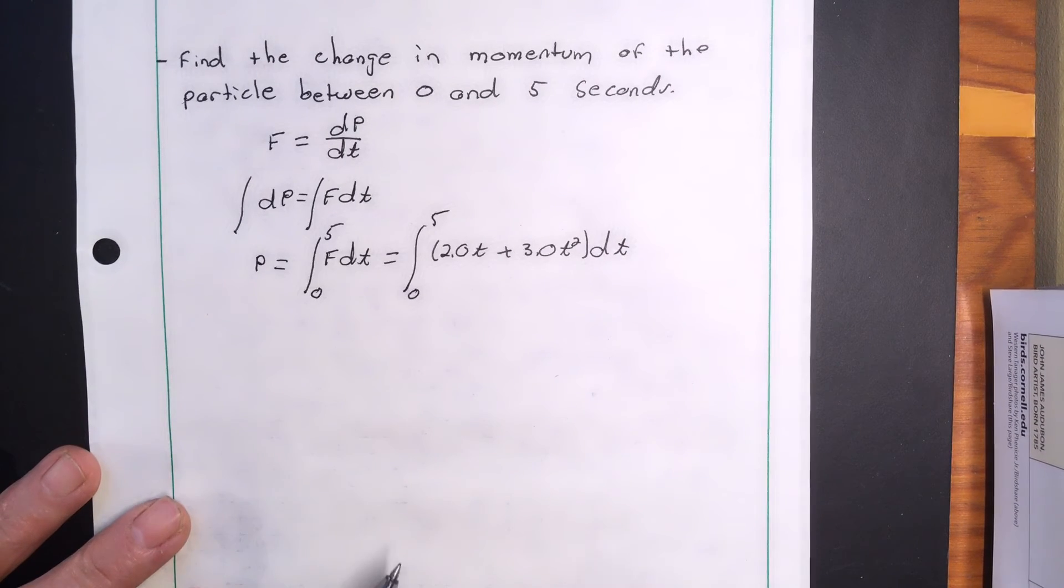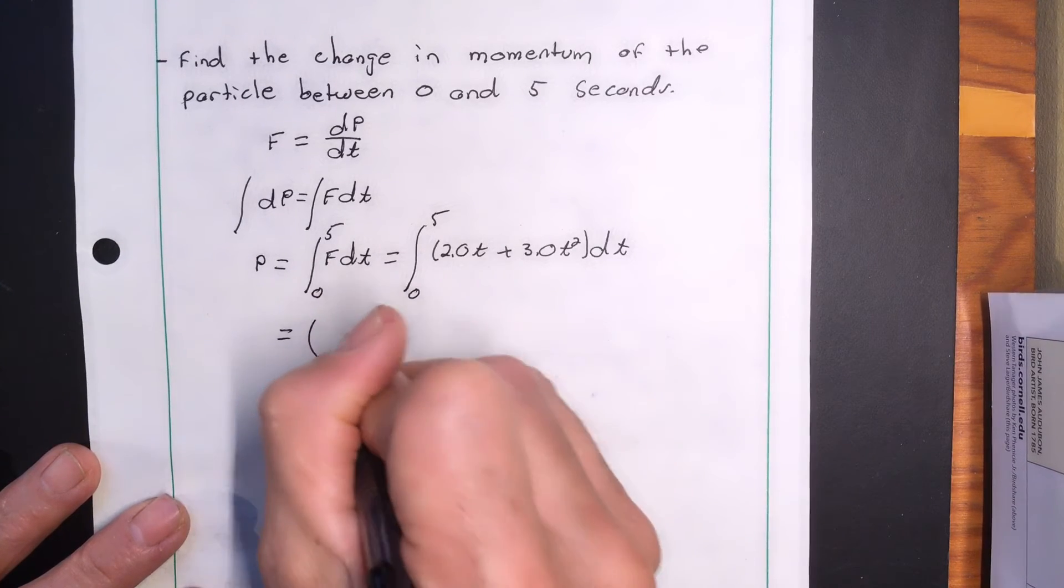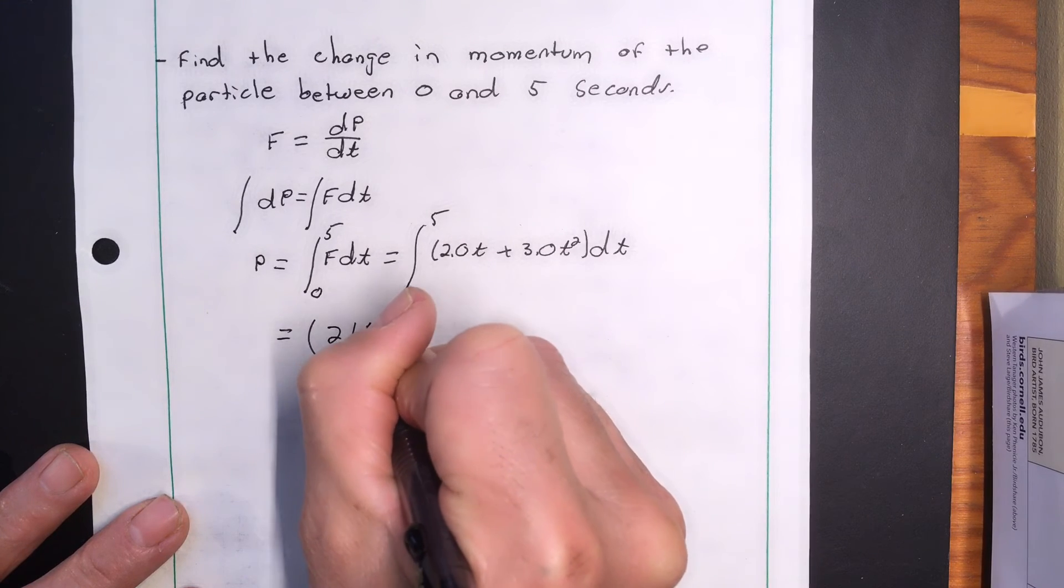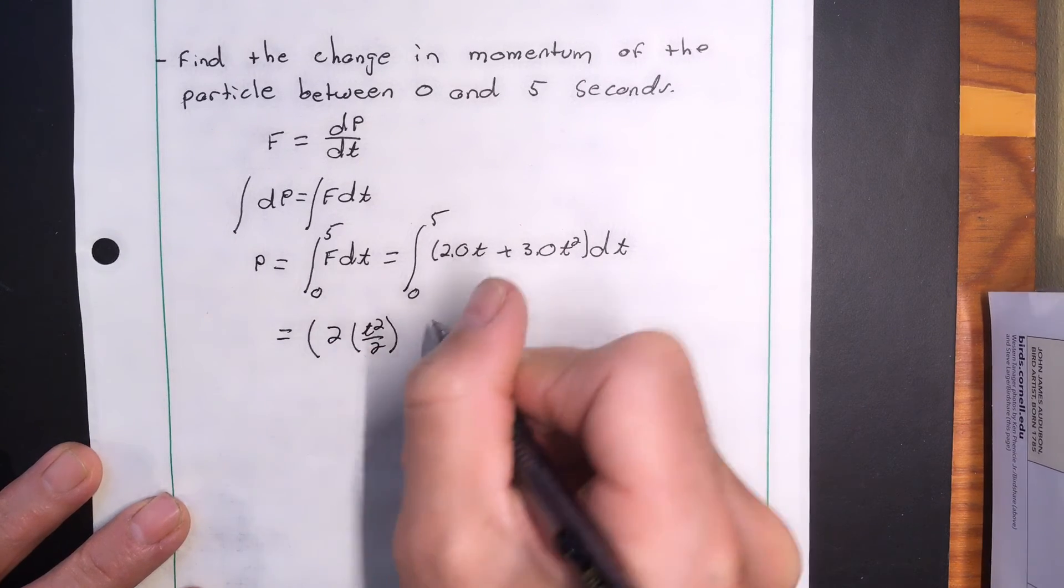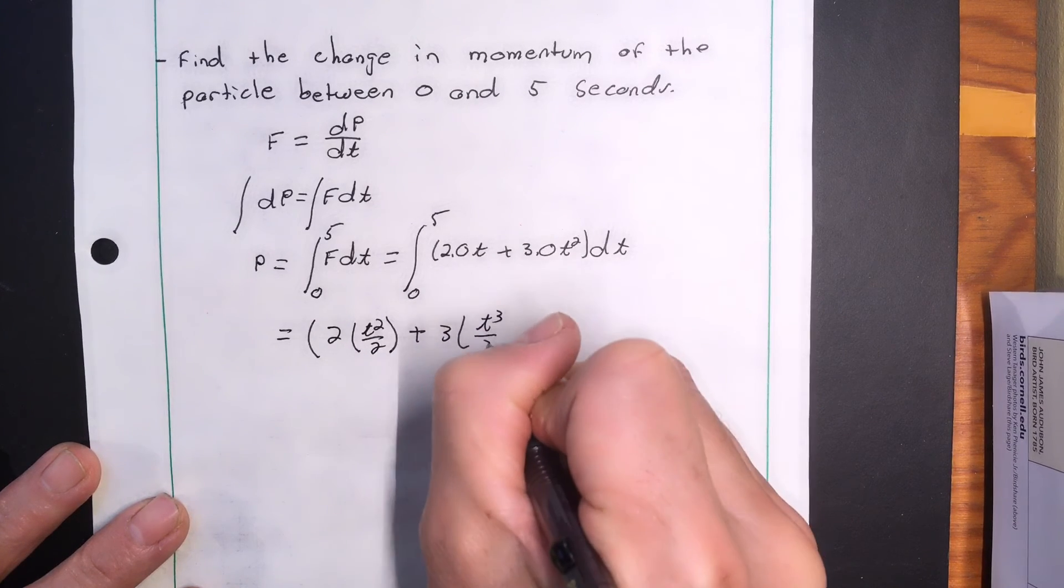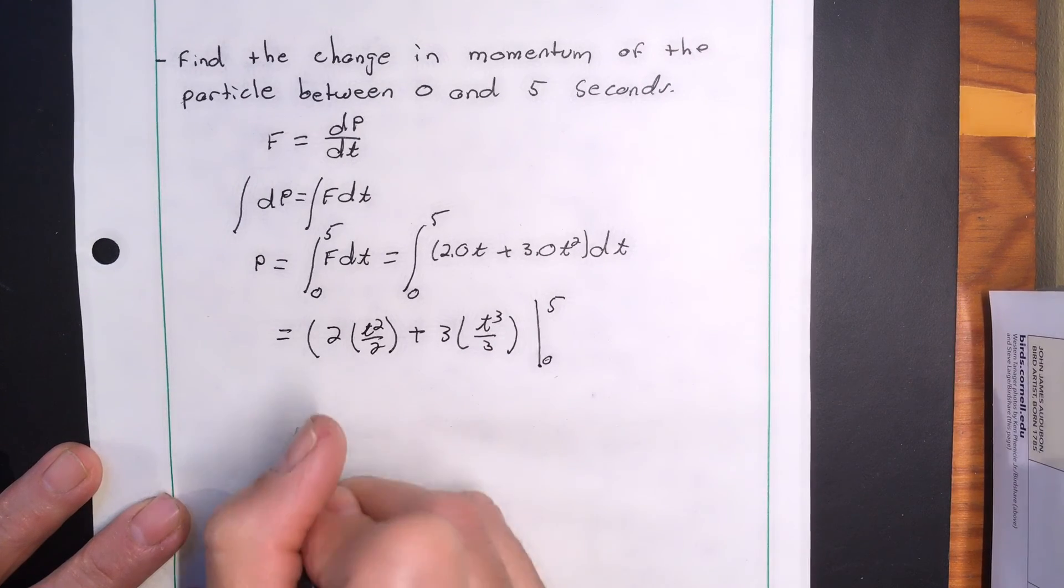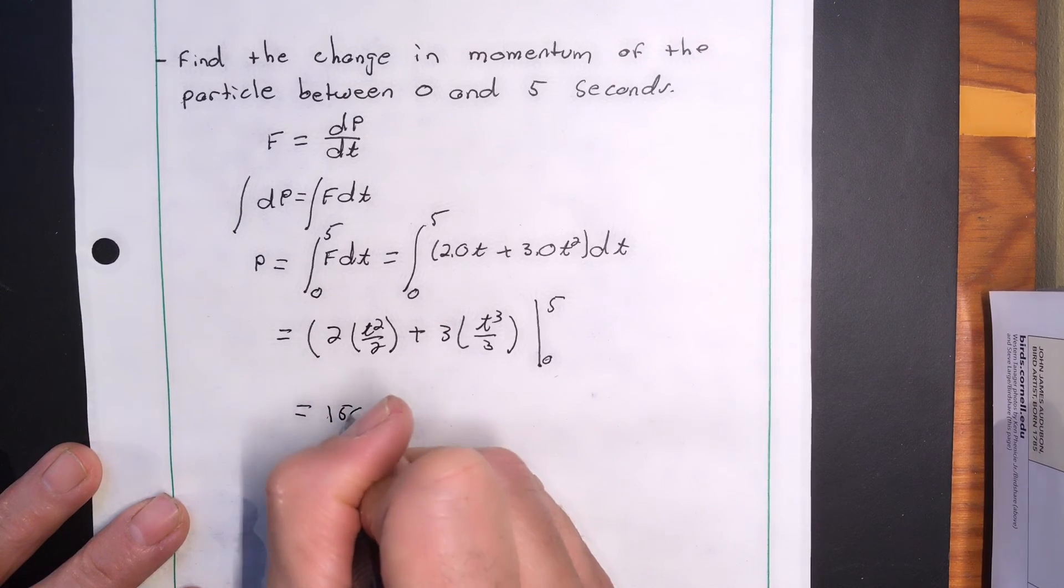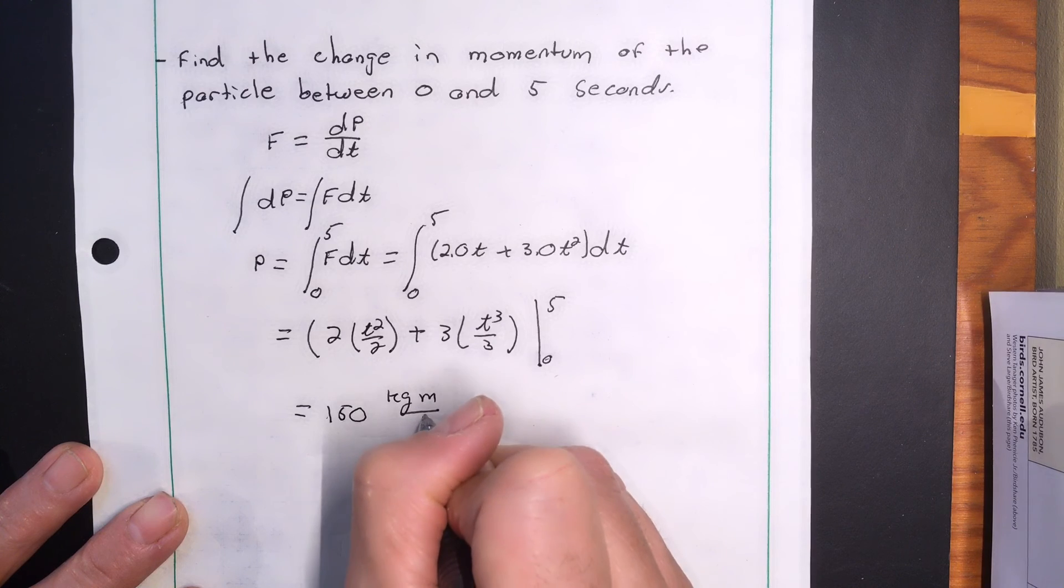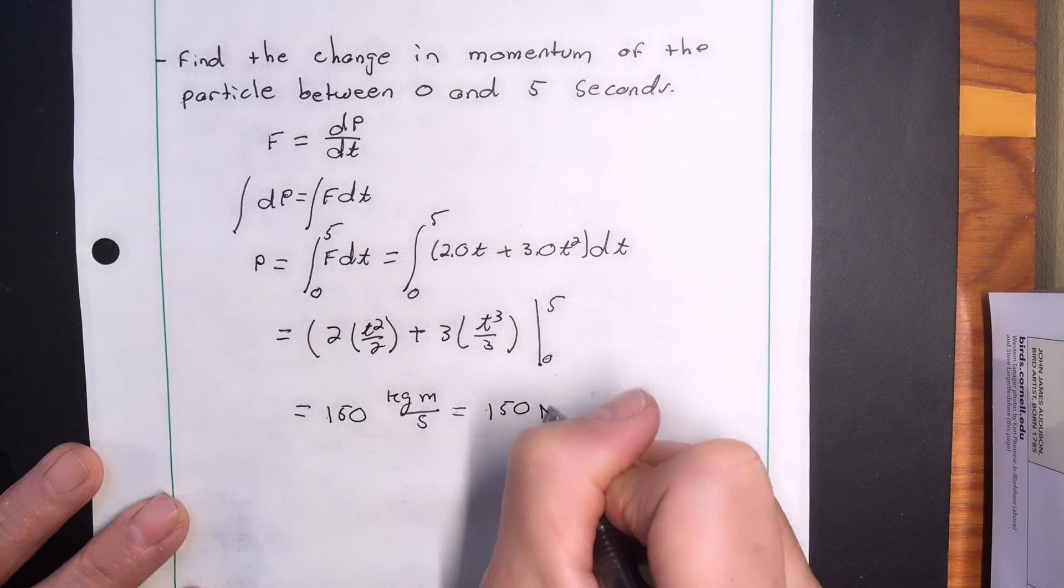So I end up with here 2 times t squared over 2 plus 3 t cubed over 3 evaluated between zero and five. So you end up with 150 kilogram meters per second or 150 Newton seconds.